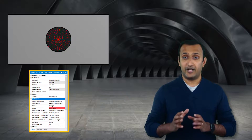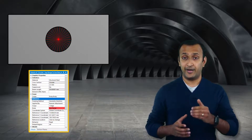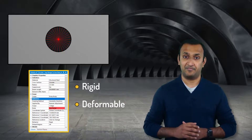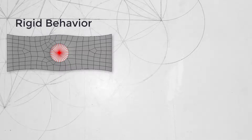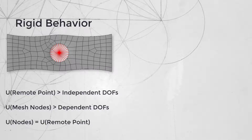Earlier, we mentioned that constraint equations mimic a connection between the remote point and the nodes on the scoped edge or surface. To control how these nodes move with respect to the remote point, remote point allows us to define the behavior of the scoped geometry — in this case representing the behavior of the face representing the bolt head or nut — as either rigid or deformable. Rigid behavior can be imagined by having infinitely stiff material connecting the remote point pilot node to the scoped geometry. Because of this, the nodes on the scoped geometry will not deform. Mathematically, this means the remote point pilot node has the independent degrees of freedom, while the nodes of the scoped geometry have dependent degrees of freedom, so they must follow the motion of the pilot node.